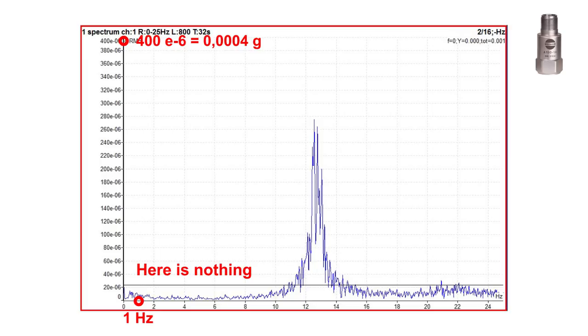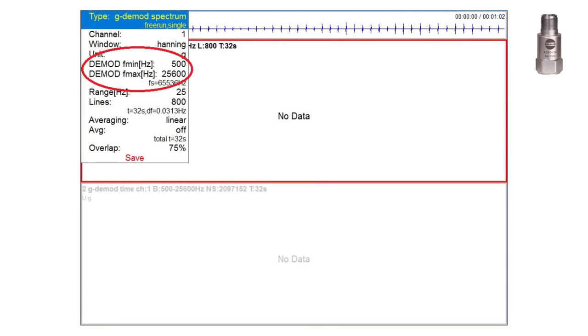Demodulated spectrum can display something visible. The demodulation spectrum uses the time signal which is enveloped. You can see the demod bandpass parameters. We want to measure only in band from 500 Hz to 25 kHz. We are not interested in low frequencies.